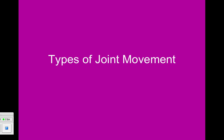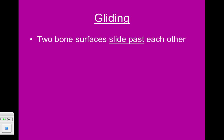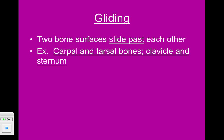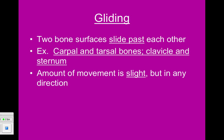The last section of our skeletal system is on the types of joint movement. The first type of movement is gliding. Gliding takes place when two bone surfaces slide past each other — for instance, when the carpal and tarsal bones slide past each other, as well as between the clavicle and the sternum. With this type of movement, the amount of movement is very slight, but it can happen in any direction.